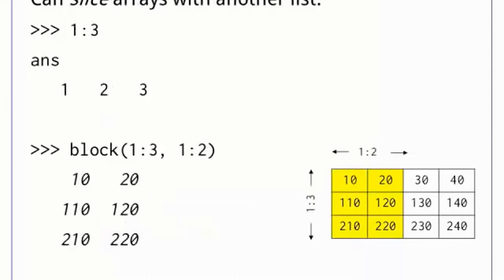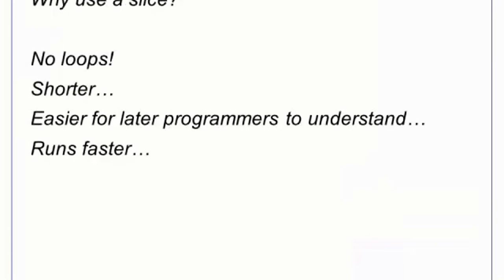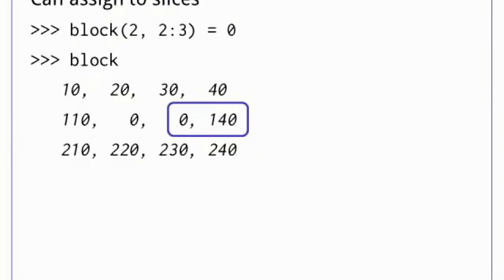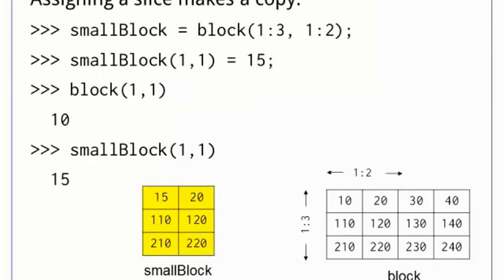Arrays can be sliced by using another array as an index. In this example, we use the array 1, 2, 3, which we can create using the shorthand 1 colon 3 notation. MATLAB programs should always use slices and other indexing operations rather than write loops over arrays. There are several advantages, including shorter code that is more easily understood and improved runtime. It is also possible to assign to slices. For example, we can assign 0 to columns 2 and 3 in row 2 of block in a single statement. An array slice makes a copy of the underlying array, which means that the data values are copied to a new location and subsequent updates do not change the original matrix.